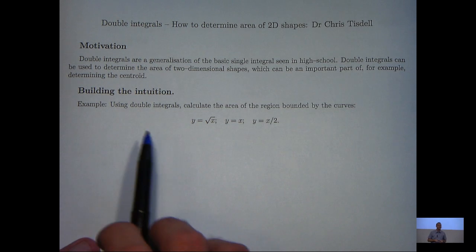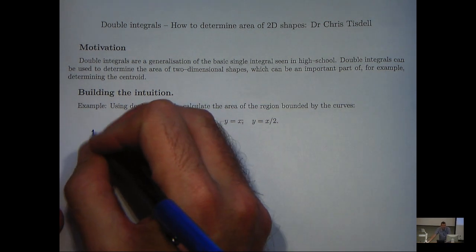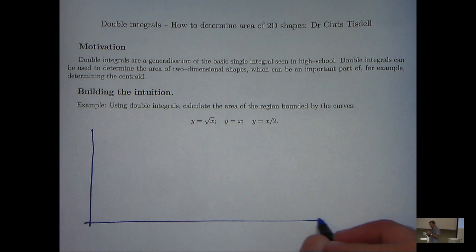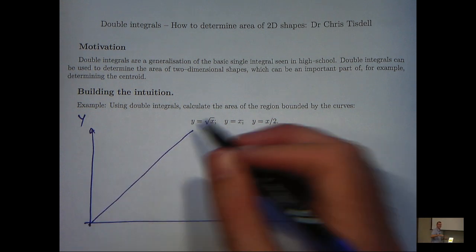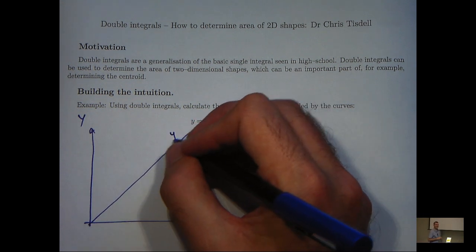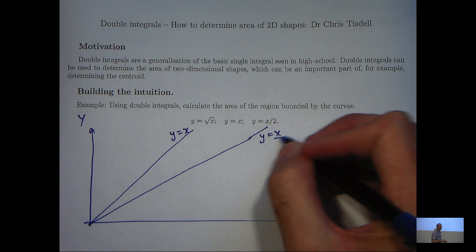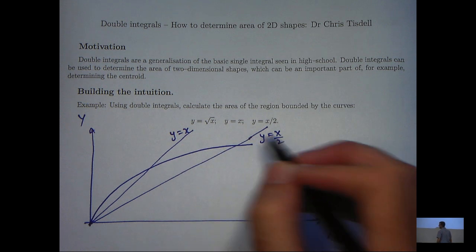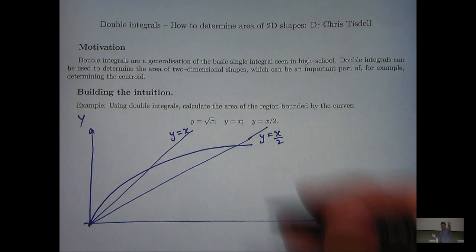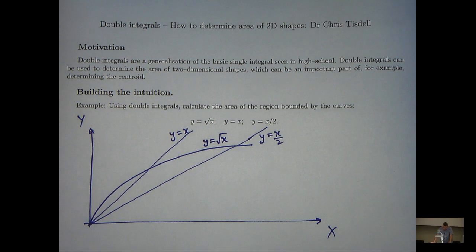So for this particular example, I'm going to sketch these curves and actually get a good geometric understanding of the region that we are working with here. So I'm just going to draw a rough sketch. So here's the line y equals x on 2, and the third curve is y equals root x. So there's our three curves there. It's a pretty ordinary graph but hopefully you get the idea.